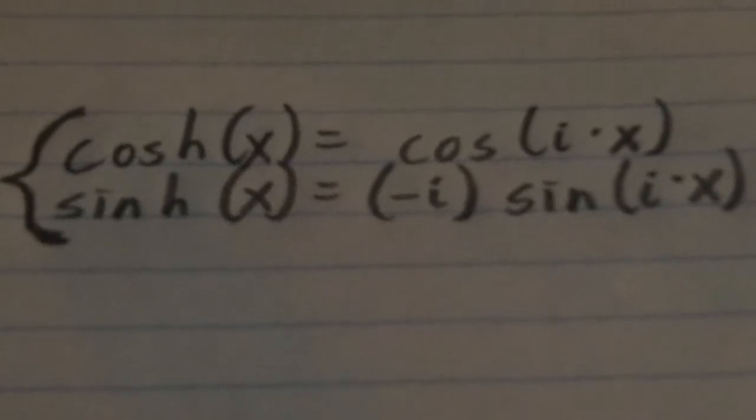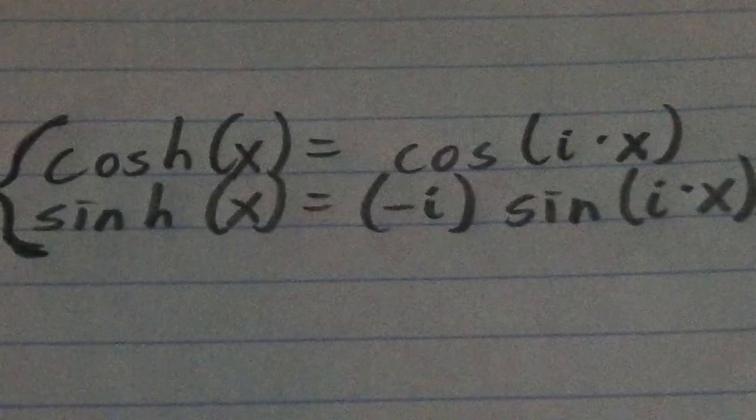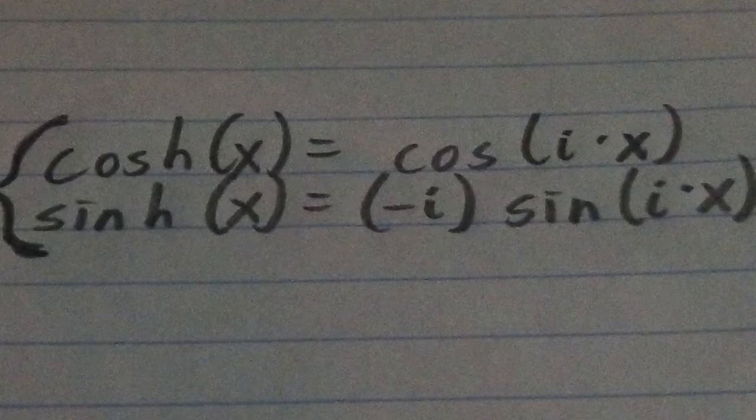And also, another interesting property, sinh of x, a hyperbolic sine, turns out to be equal to negative i times the sine of ix. And I could prove these, it just takes a while to prove. You can probably tell how this is true if you watch my other videos and do a little bit of independent study.